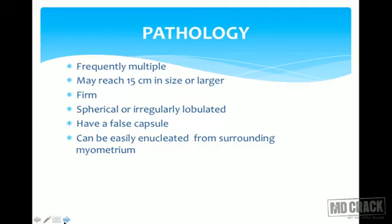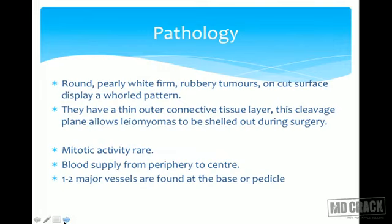Fibroids are frequently multiple and may reach 15 centimeters or larger. They are firm in consistency, spherical or irregularly lobulated. They have a false capsule and can be easily enucleated from the surrounding myometrium. They are round, pearly white, firm, rubbery tumors, and on cut surface show a whorled pattern. They have a thin outer connective tissue layer, and this cleavage plane allows the leiomyoma to be shelled out during myomectomy.